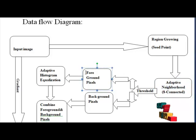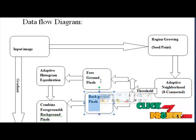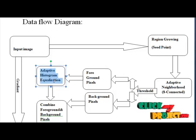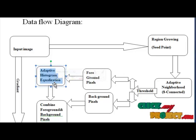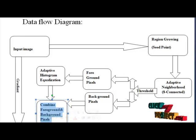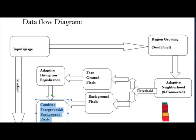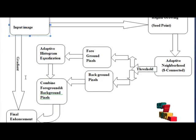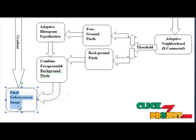Belonging the threshold value, pixels are divided into foreground pixels and background pixels. The next step is to alter the gray level values of each pixel in the foreground buffer by adaptive histogram equalization of the foreground pixels. Then combine the pixels in the foreground and background buffer to form the enhanced image, and finally obtain the gradient of the original image and add it to the combined image to get the final enhanced image.